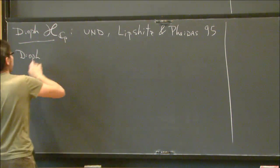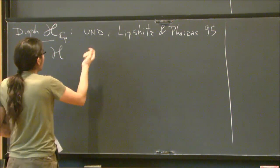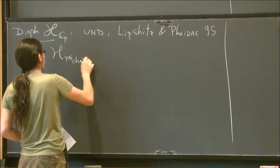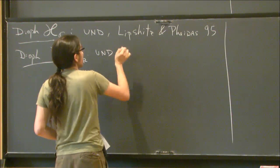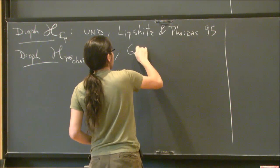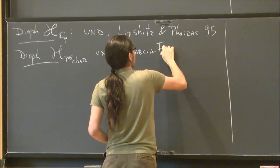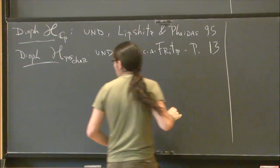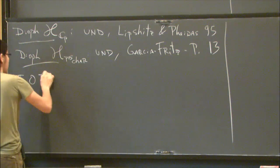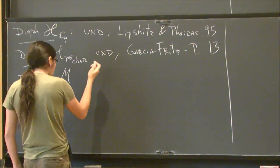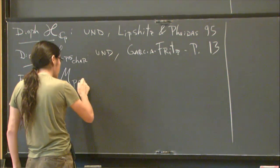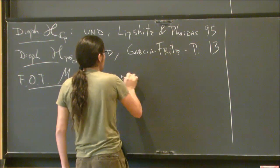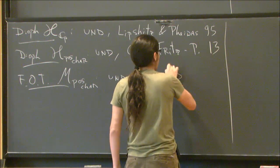The Diophantine problem for analytic functions over a complete non-Archimedean field of positive characteristic—this is undecidable, and this is by Garcia-Fritz-Koenigsmann, 2013. And the first-order theory of meromorphic functions over a complete non-Archimedean field of positive characteristic—this is undecidable, and this is this year.